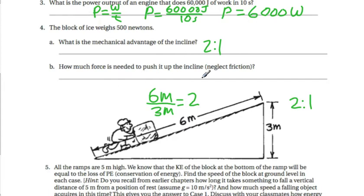So if the advantage is 2 to 1 and it takes 500 newtons to lift it straight up, that means it would take exactly half of that same force to push it up this incline. So half of 500 newtons is 250 newtons.